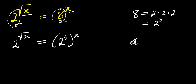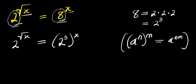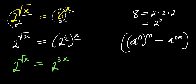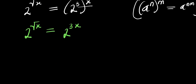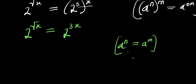Now if you have a power n raised to the power of n, this equals a power n times n. So we are going to multiply these exponents. We have 2 to the power of square root of x, and this equals 2 to the power of 3x. So if you have a to the power n equals a to the power m, then you can have n equals m.